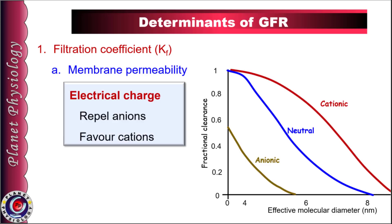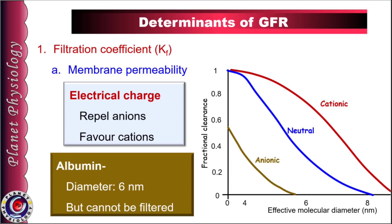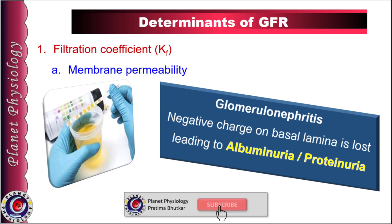The glomerular membrane is negatively charged and hence repels substances with negative charge, i.e. anions, as indicated by the golden color line. This is the reason why albumin is not filtered in spite of its smaller diameter. In contrast, the membrane favors filtration of cations as shown by the red curve. The porous nature of the filtration membrane allows rapid filtration of plasma, and the negative charge prevents filtration of plasma proteins, making it a selectively permeable barrier. In acute glomerulonephritis, the basal lamina of endothelial cells loses its negative charge, and hence albumin gets filtered and excreted in urine — a condition called albuminuria or proteinuria.